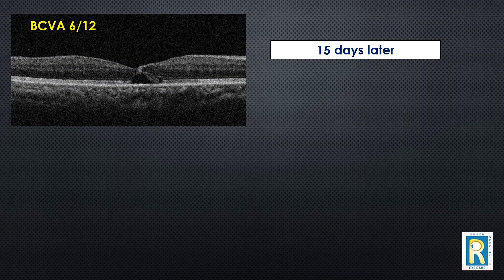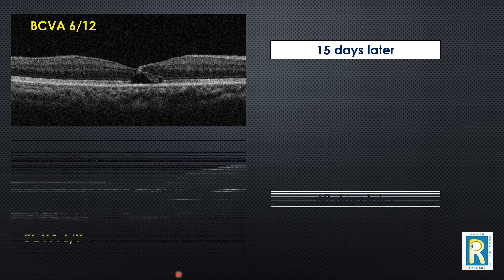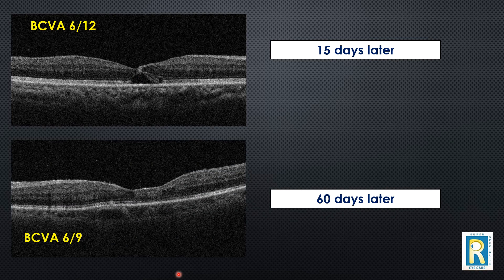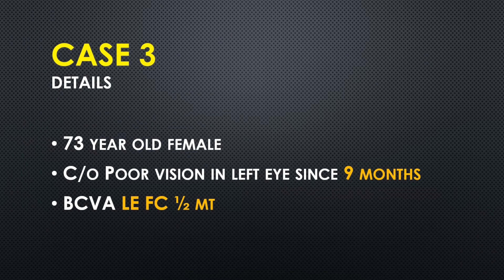With just this vitrectomy, in 15 days the inner edges of the hole had opposed, and in two months the foveal morphology was restored — the hole was beautifully closed with good recovery of vision. The third and final case was a 73-year-old female who complained of poor vision in her left eye for nine months.